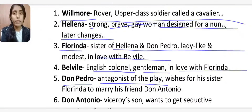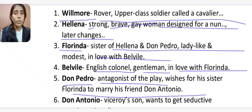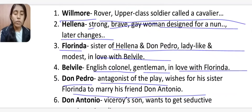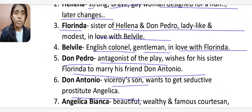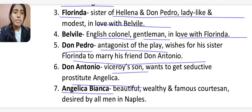Don Pedro is the antagonist and villain of the play. He wishes his sister Florinda to marry his friend Don Antonio, while their father wants her to marry Don Vincentio. Don Antonio is the Viceroy's son who initially likes Florinda, but then falls for the famous prostitute Angelica Bianca. Angelica Bianca is very beautiful, wealthy, famous, and desired by all men in Naples.